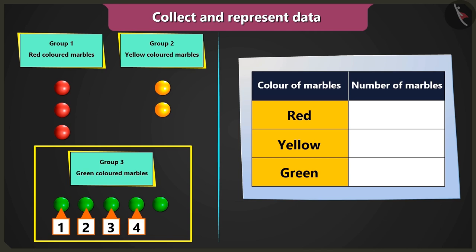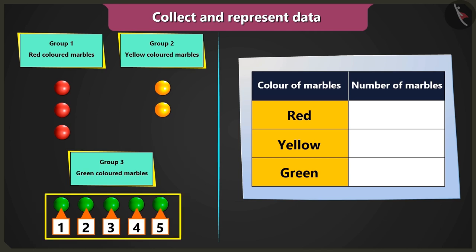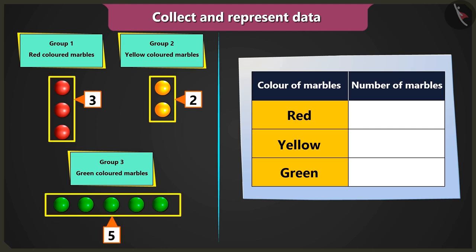And one, two, three, four, and five green marbles in the third group. Now we have to write these numbers in the table.